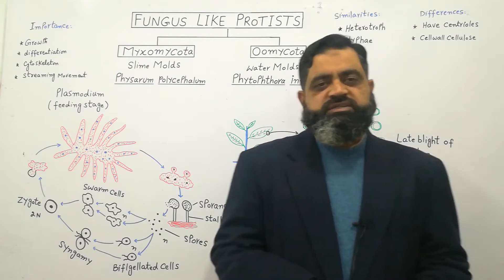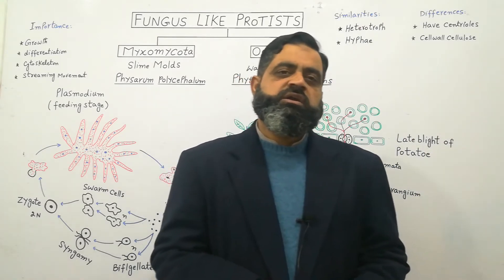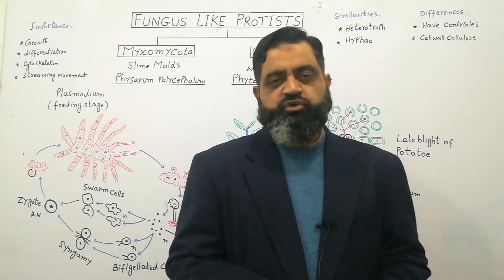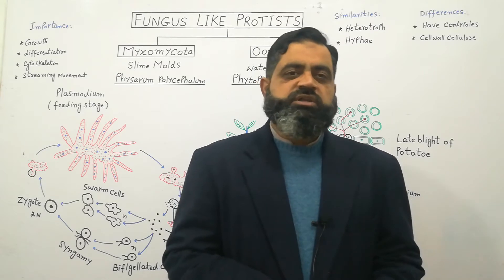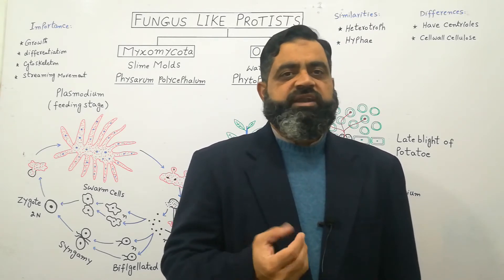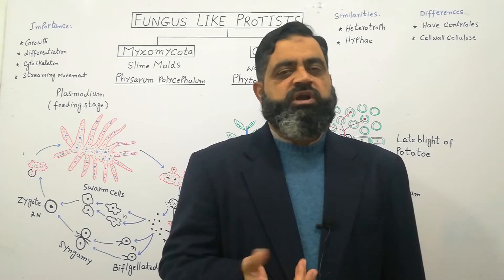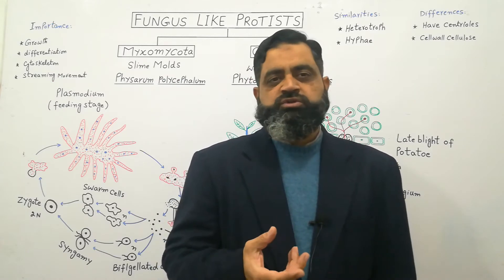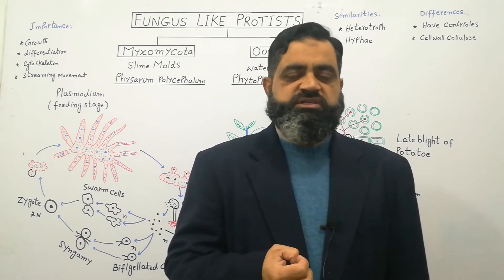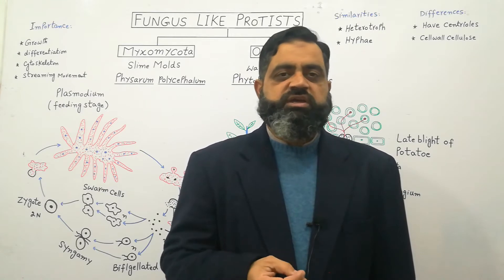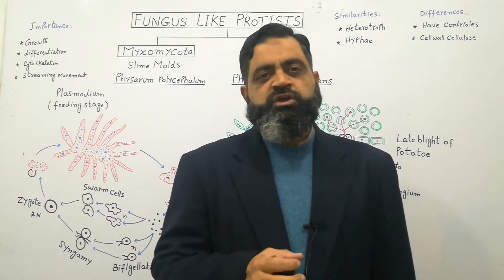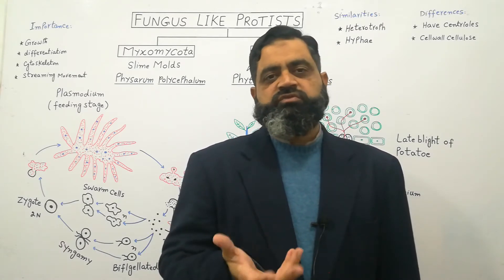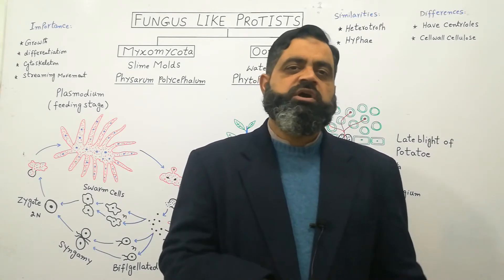But later on, studies suggested that these are not actual fungi because there were differences between fungi and fungus-like protists. Number one, fungus-like protists have centrioles while fungi do not. Number two, fungus-like protists have a cell wall made up of cellulose, which is a component of plant cell walls, while fungi have a cell wall made up of chitin. Because of these two differences, fungus-like protists were excluded from Kingdom Fungi and placed into Kingdom Protista.